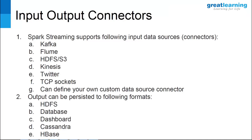Common sources you already know — Kafka. The basics of Kafka: topics, partitions, offsets, and so on. Kafka is the most common source for getting the data. We also have Flume. And then you can also read from HDFS or S3, so there is something called a text file stream.